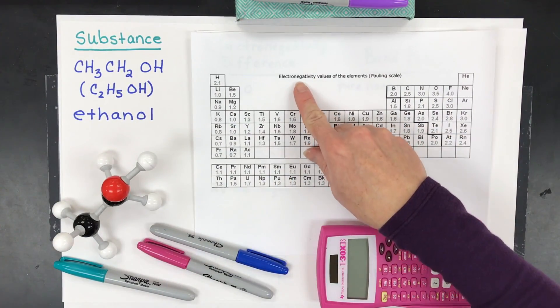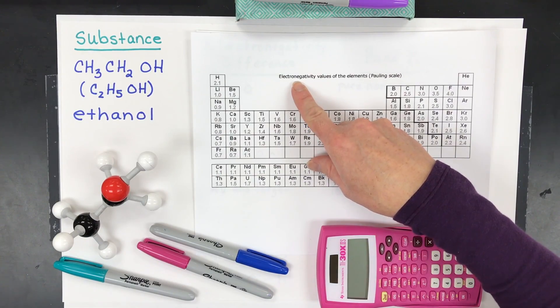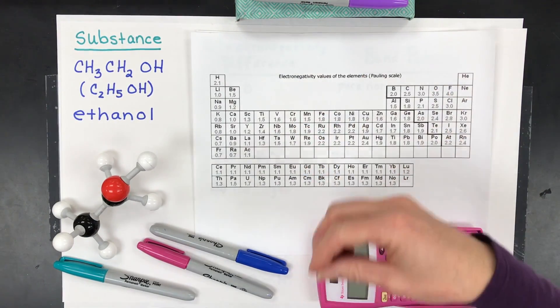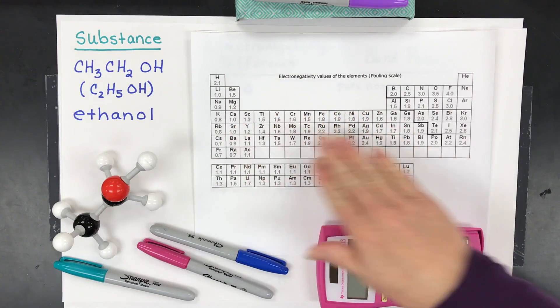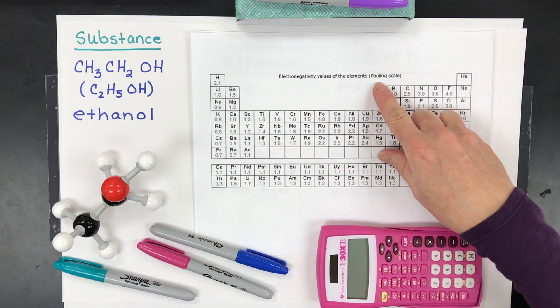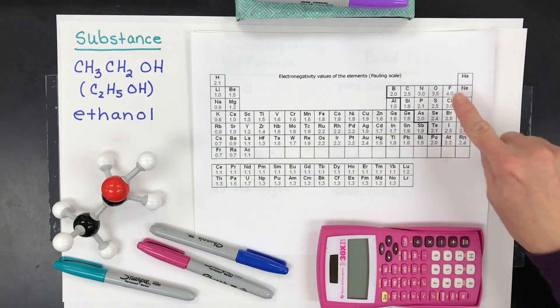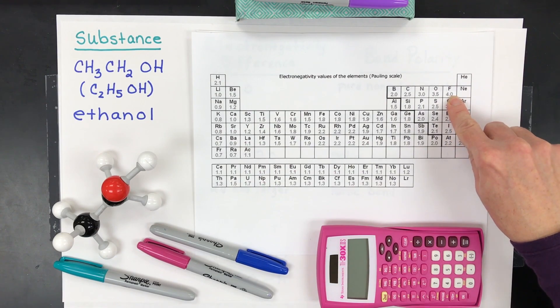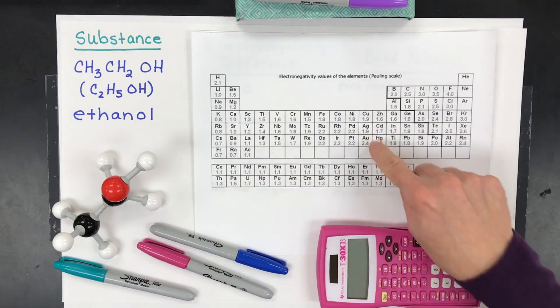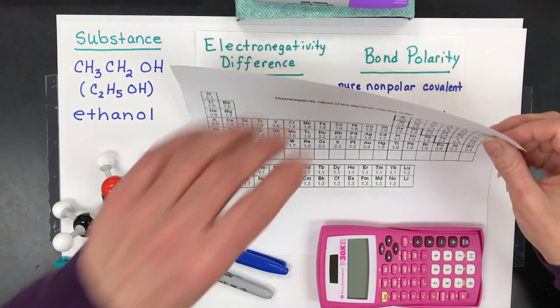So electronegativity is the ability to pull on electrons in a chemical bond towards the nuclei of that atom. So every atom was rated. Linus Pauling came up with this. It's called the Pauling scale. So fluorine has the best ability to pull electrons towards its nuclei in a chemical bond, and francium is the lowest. So find one of those. Make sure you have it. We're going to use it.